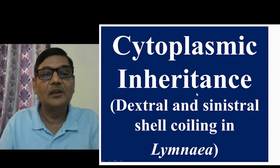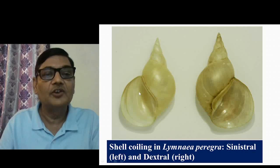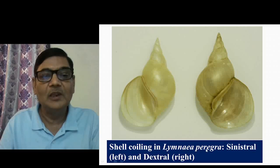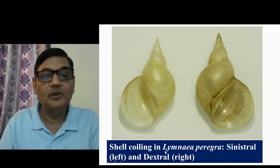Let us understand exactly what happens for the determination of this shell coiling pattern. We are observing here in this figure two empty shells of Limnea. This phenomenon can be studied in case of Limnea perigra, although there are several species of Limnea, and in all such cases dextral and sinistral type of shell coiling may be present, but this phenomenon has been studied in much detail particularly in Limnea perigra.